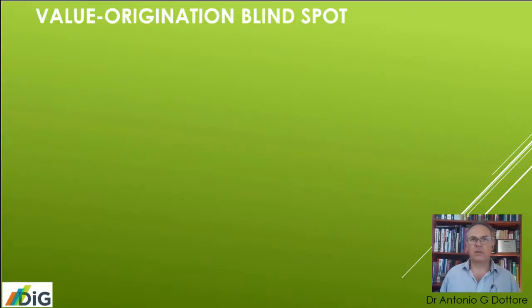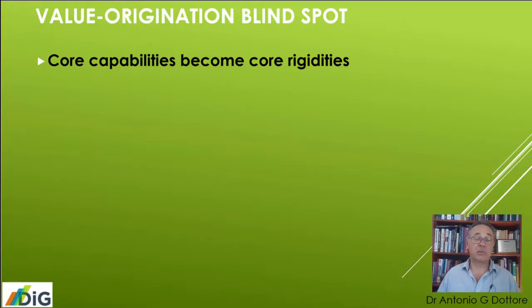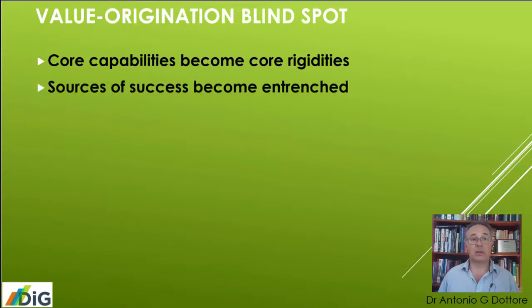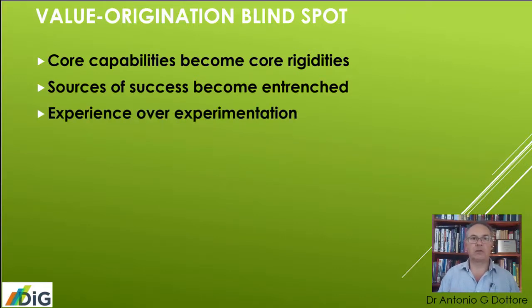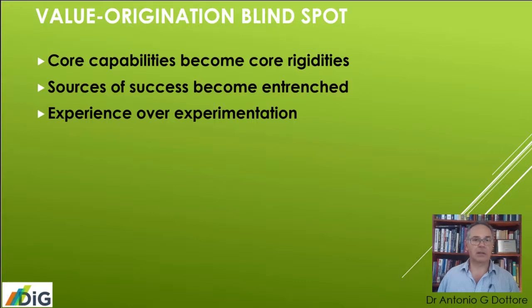We don't always understand where to find these value-originating ideas — value creation. Partly because core capabilities can become core rigidities. What we're really good at, we keep on doing, but the market's moved on and we don't necessarily go with them. So the sources of success become entrenched, the culture becomes entrenched and self-perpetuating. We place more attention on experience over experimentation. Maybe at the beginning, how we came to our innovations was through experiments and novel approaches, but then that becomes forgotten and it's harder to maintain in a successful organization.